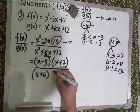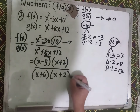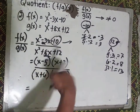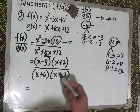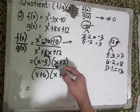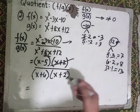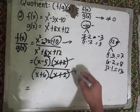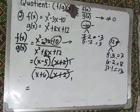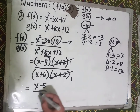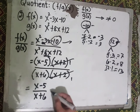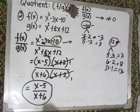So the factor of the denominator is (x + 6)(x + 2). Now looking at the full expression: (x − 5)(x + 2) over (x + 6)(x + 2). We can see that (x + 2) appears in both numerator and denominator, so (x + 2) divided by (x + 2) equals 1 — we can cancel it out.